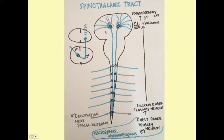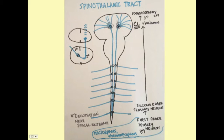The spinothalamic tract is similar to the DCML tract with a couple of exceptions. The spinothalamic tract is responsible for sensing crude touch, pain, and temperature. Primary first-order neurons come in, enter the dorsal horn, and synapse — but rather than traveling up before decussating, the spinothalamic tract decussates right away. The secondary neuron then travels all the way up to the thalamus and sends projections to the somatosensory cortex.